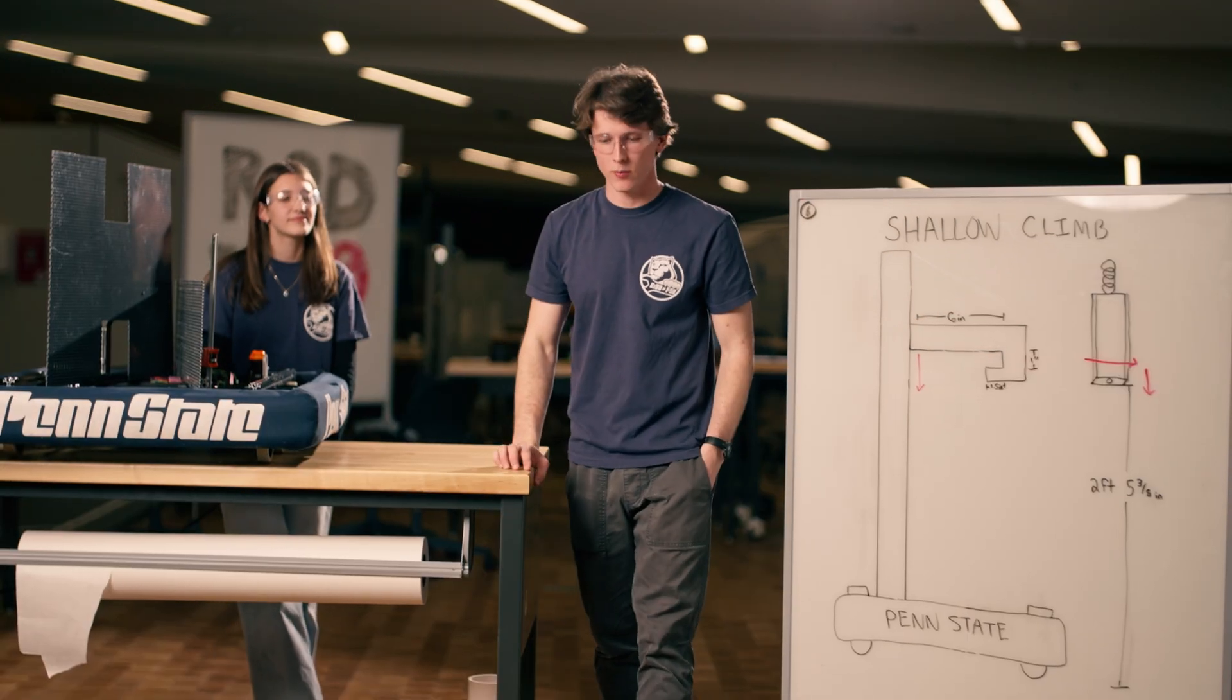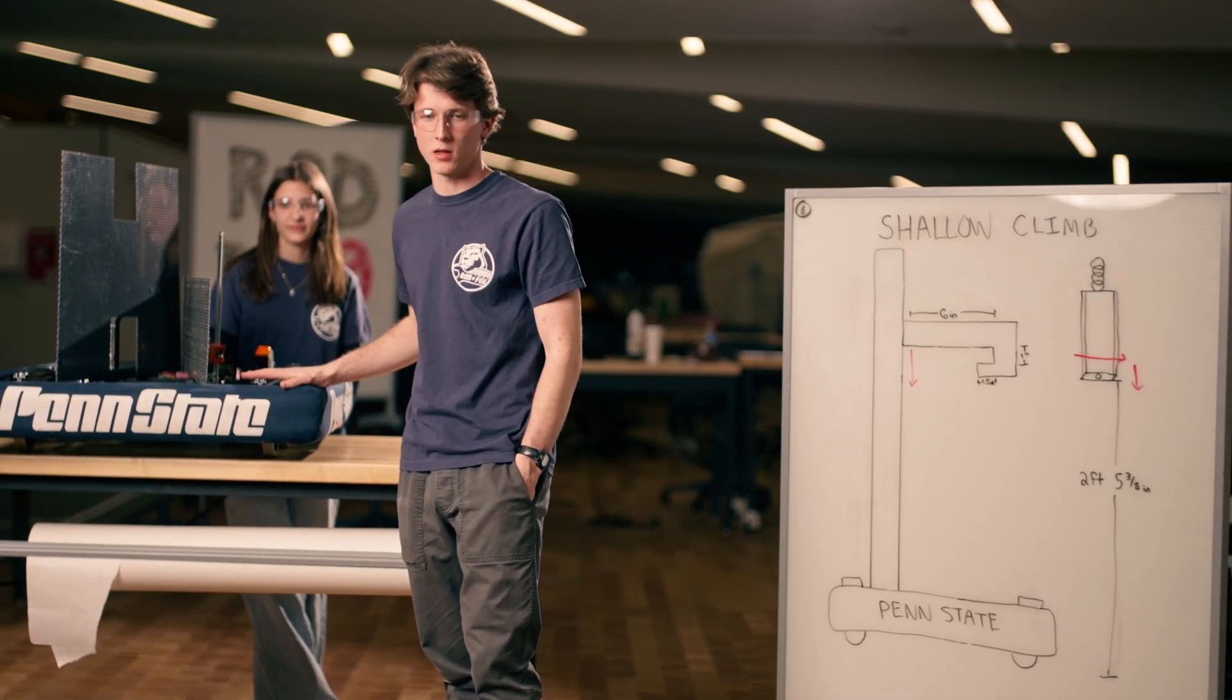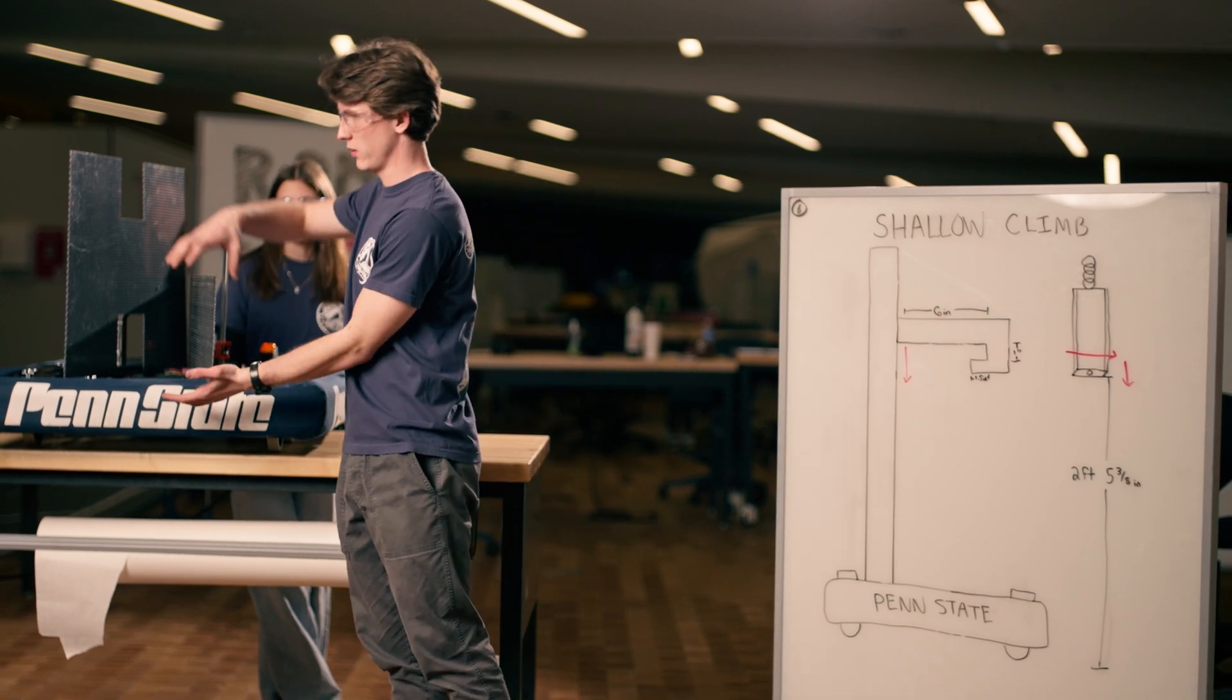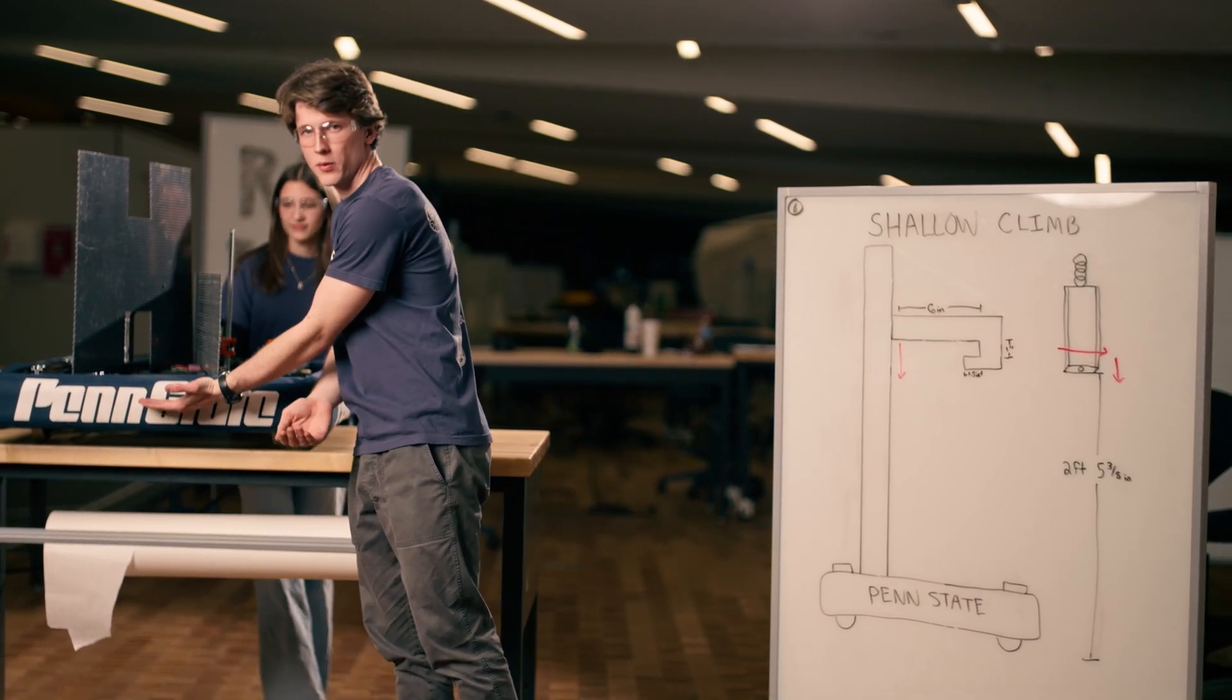Our seventh and final prototype that we'll be looking into more tomorrow is a method of doing the deep climb. With the deep climb, the cage will be resting on a chain only three and a half inches off the carpet, about midway up our bumpers.